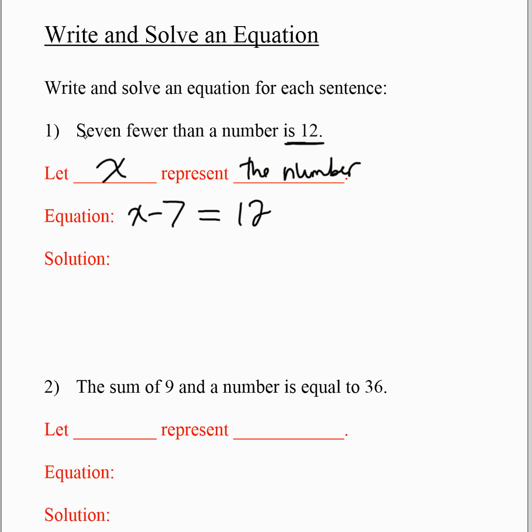So now what I've done is I've taken the word seven fewer than a number is 12 and I've written an equation. The first step though is to do this let statement so you can tell the reader what your letter represents. Now I need to solve. So to solve, I need to add seven to both sides.